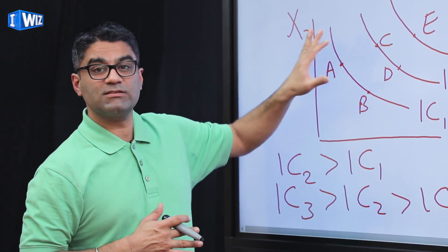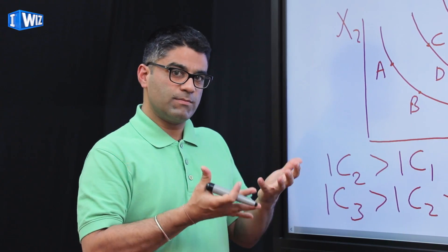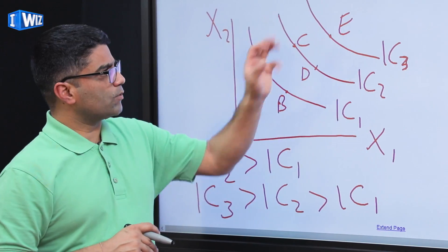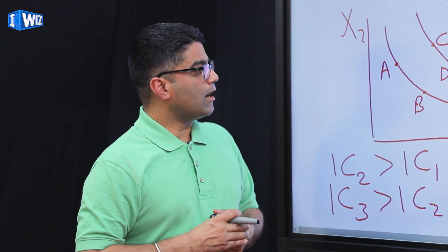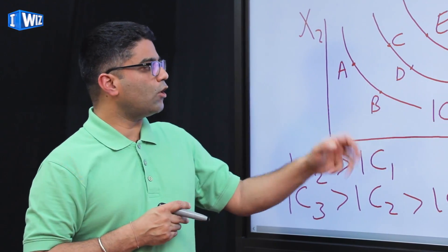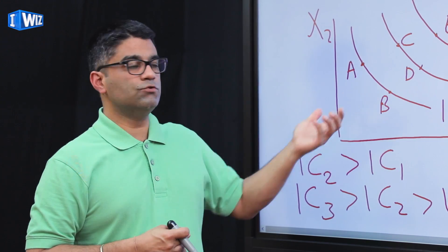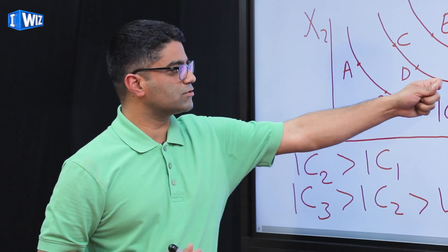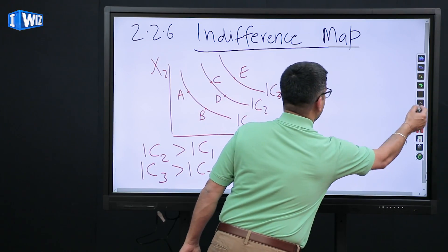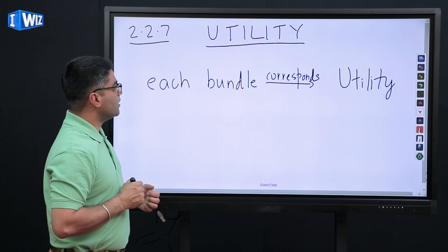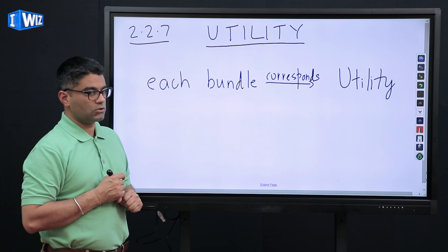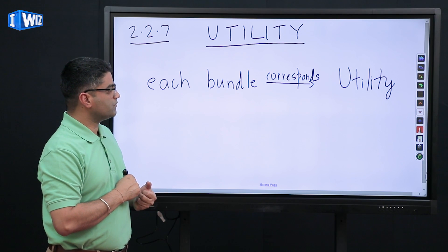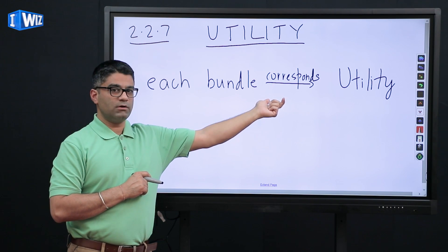If you pick any point on this space given this information, you can tell me whether you're indifferent between those bundles or whether you prefer one over the other. That's what we mean by an indifference map. Now what we're going to talk about is how do we actually rank them? So far all I've said is I am happier on indifference curve 2 than on indifference curve 1. But how do we rank quantitatively how much happier I am on indifference curve 2 relative to indifference curve 1 is the concept of utility. We are going to quantitatively rank our preferences across all the bundles and across all the indifference curves, and each bundle is going to correspond to some number which represents utility.